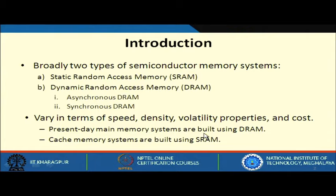Present-day main memory systems are built using DRAM, and cache memory systems are built using SRAM. Cache memory is relatively fast but small, while DRAM is relatively slower but can store a large amount of data.